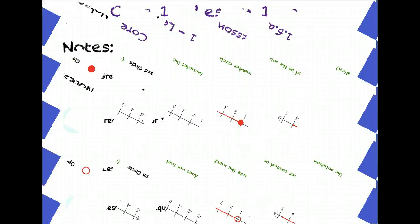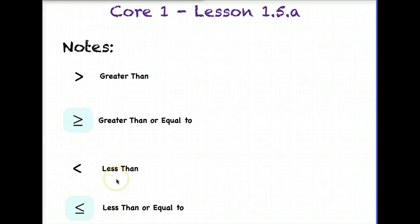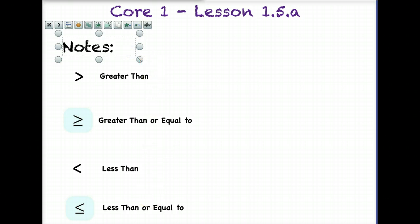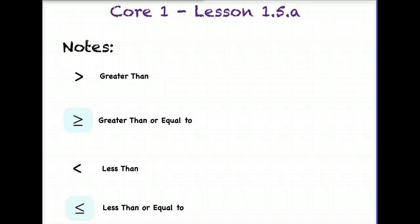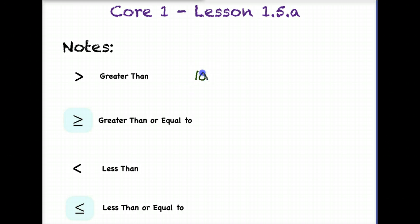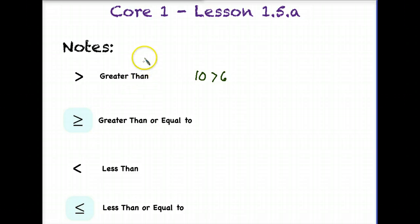A couple more things: we need to understand what the inequality symbols represent. Read them from left to right — just like in PEMDAS. When you're looking at inequalities, look at them from left to right, unless you have a variable, in which case you'll read it from the variable. In this case we have a greater than sign. For example, 10 is greater than 6. Getting in the habit of reading left to right, or from the perspective of the variable, will help you get it right.